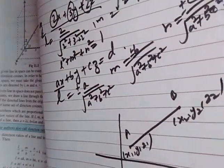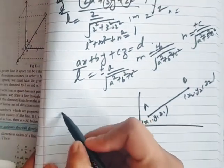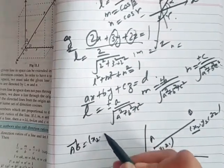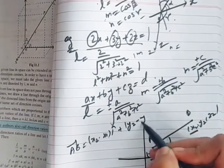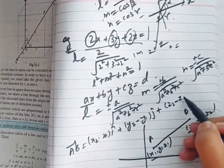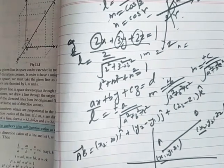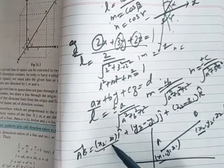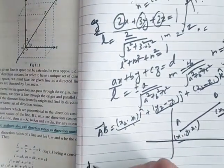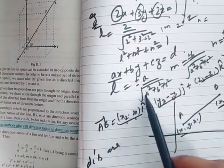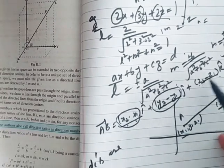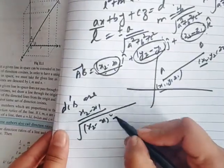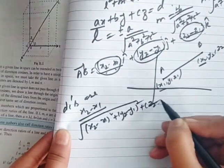The vector AB is generated as: (x₂ - x₁)î + (y₂ - y₁)ĵ + (z₂ - z₁)k̂, which is the position vector of B minus position vector of A. These components become the DRs. Now since we need DCs, the formula gives us: L = (x₂-x₁) / √[(x₂-x₁)² + (y₂-y₁)² + (z₂-z₁)²].